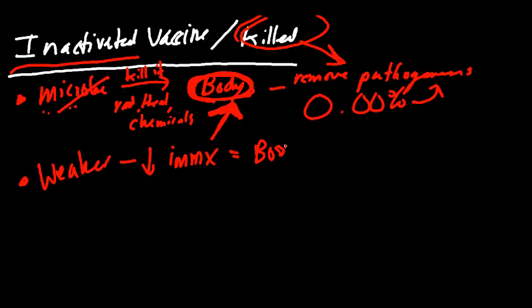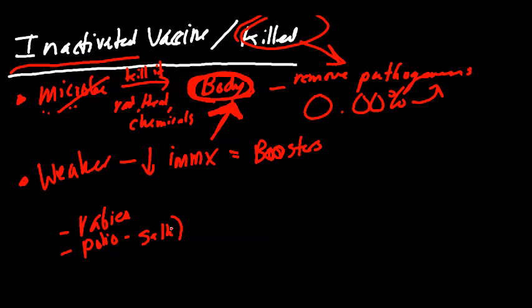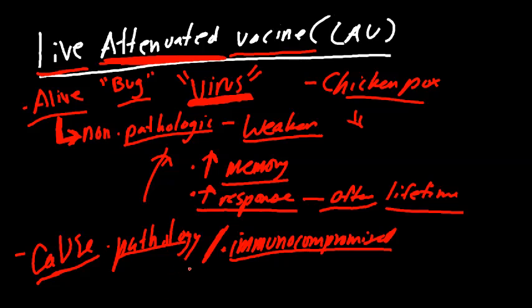So we're probably going to need booster shots. Examples of inactivated vaccines include rabies and polio — this is the Salk form of the polio vaccine. Going back to the live attenuated, that would be the Sabin form for polio. Also, I want to point out that chicken pox was an example of live attenuated. We also have MMR — for measles, mumps, and rubella — and the nasal spray influenza vaccine. These are all live attenuated vaccines.